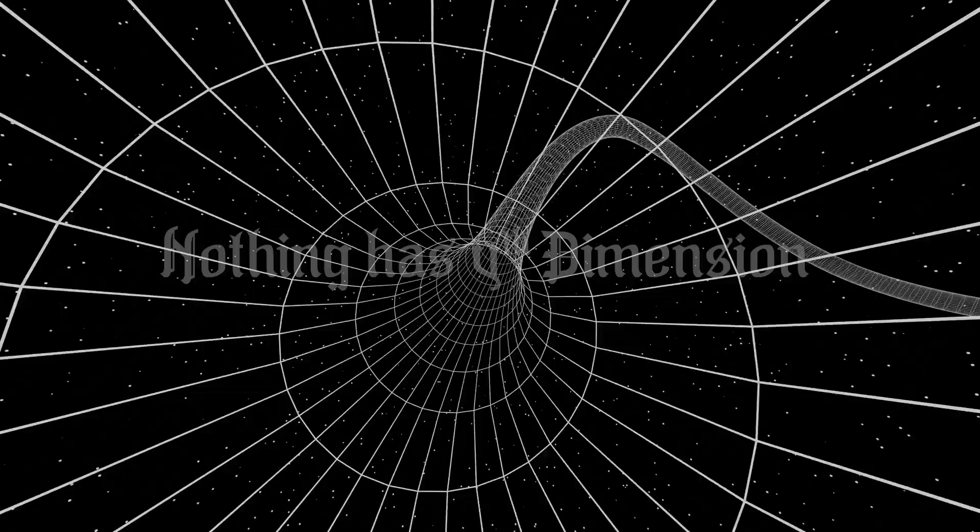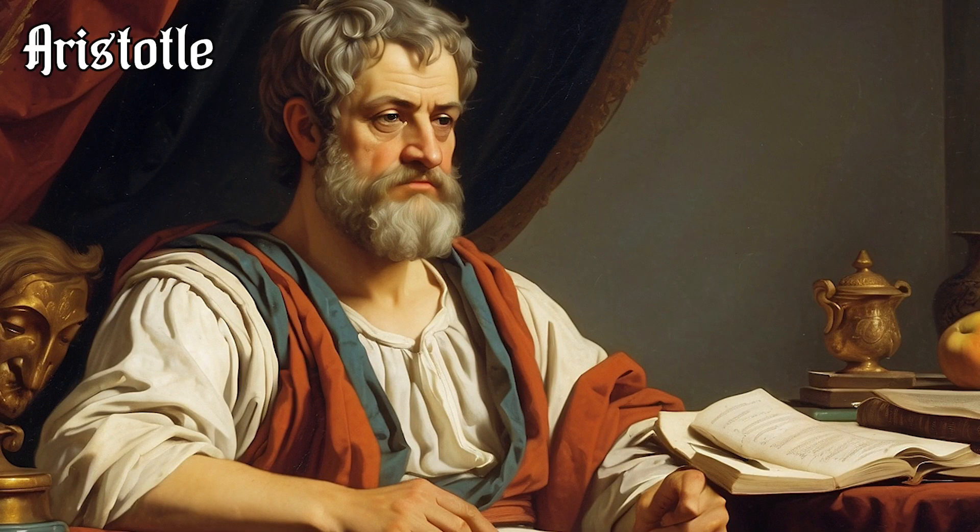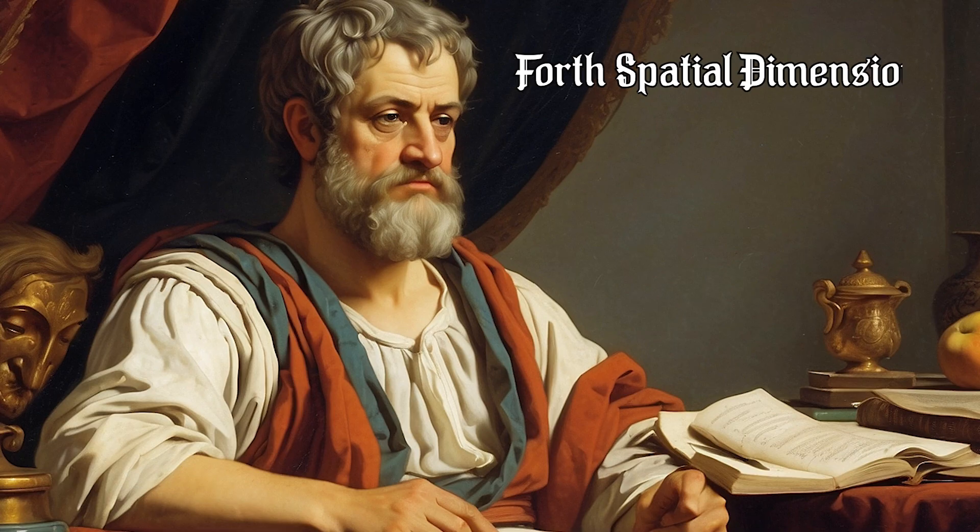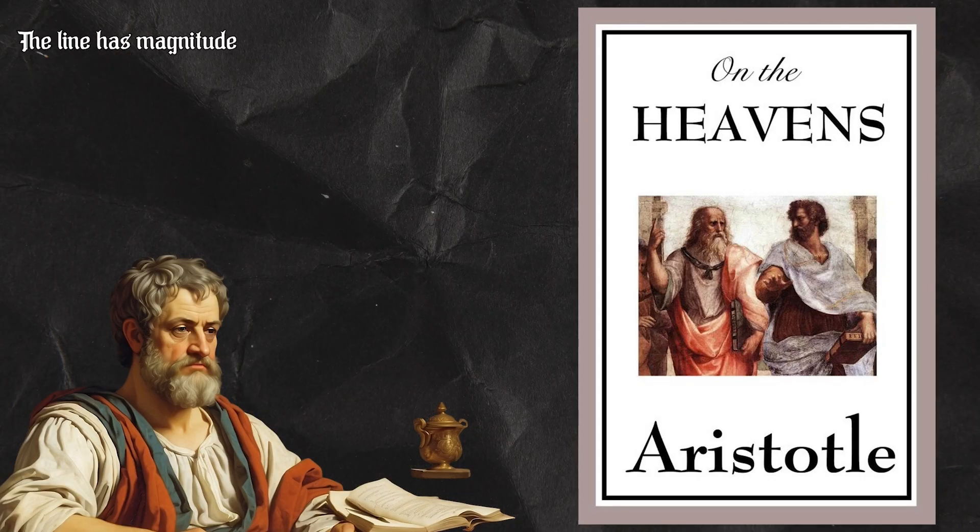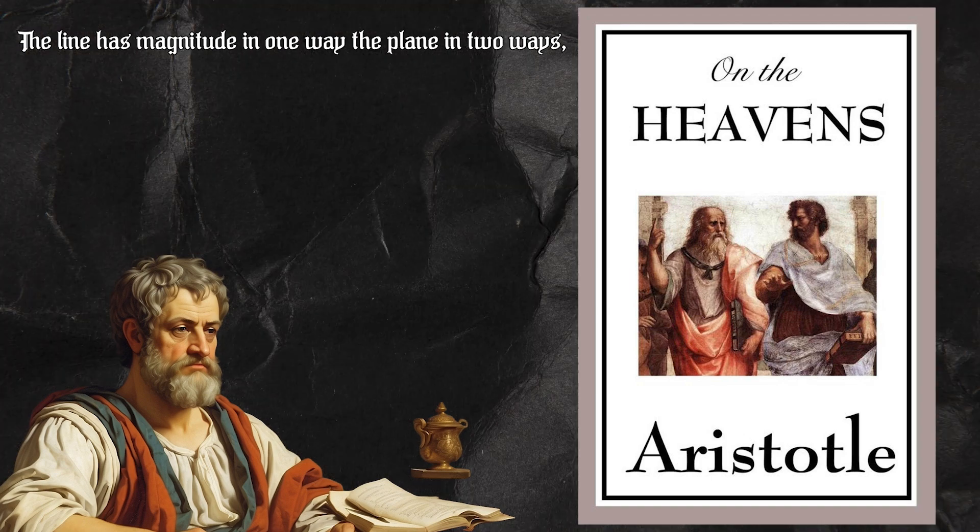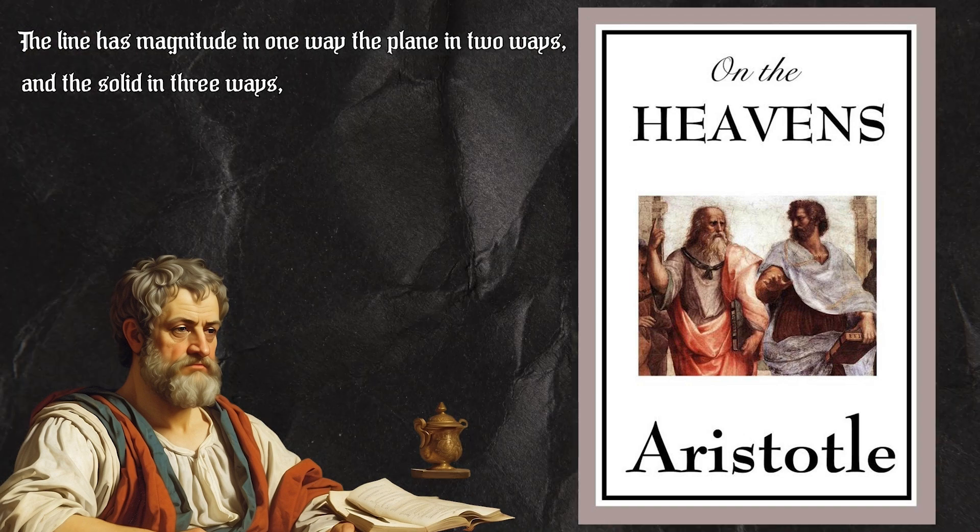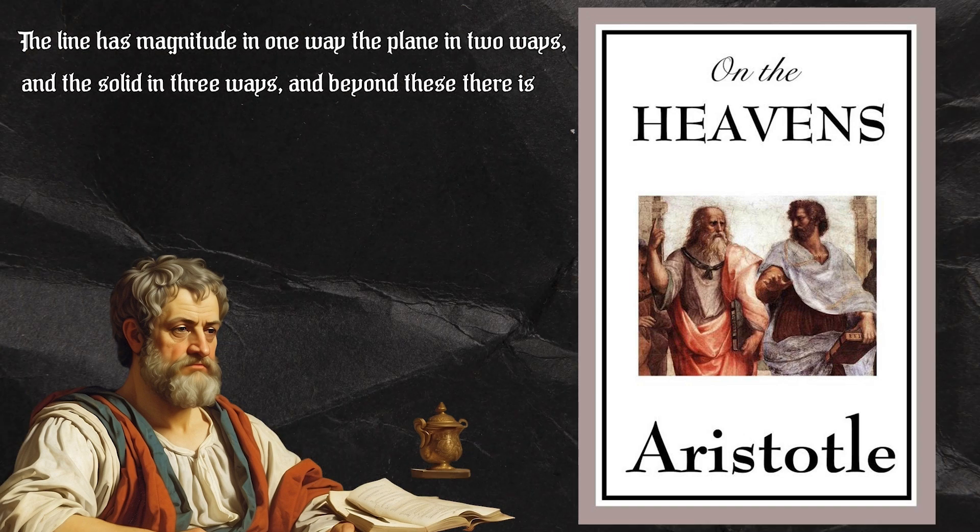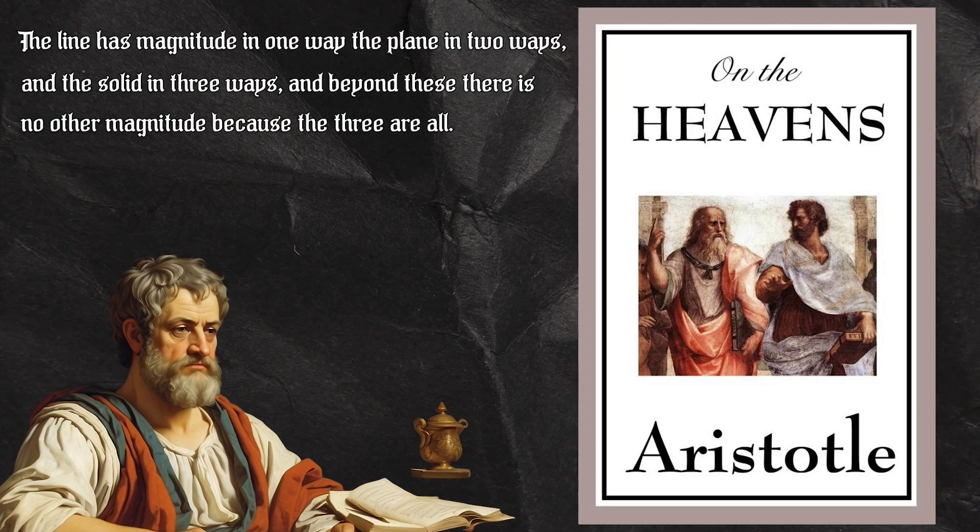These sentiments were echoed by the philosopher Aristotle, who apparently was the first person to state categorically that the fourth spatial dimension is impossible. In On Heaven, he wrote: the line has a magnitude in one way, the plane in two ways, and the solid in three ways. And beyond these, there is no other magnitude because the three are all.